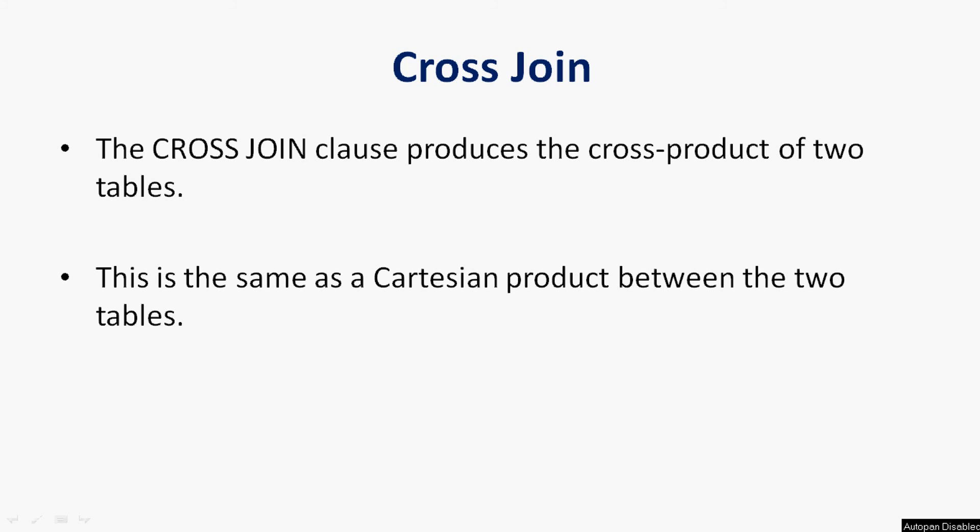Now we will see the cross join. The cross join clause produces the cross product of two tables — this is the same as a Cartesian product between the two tables.